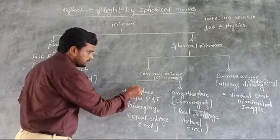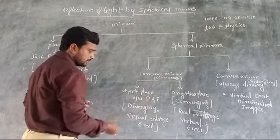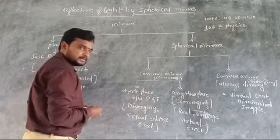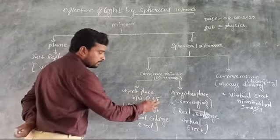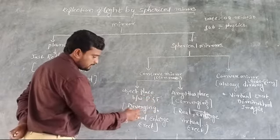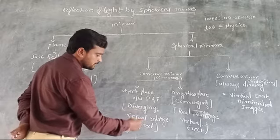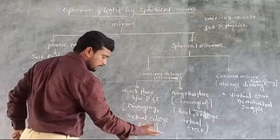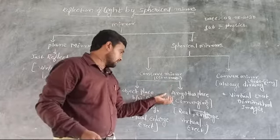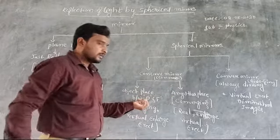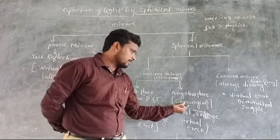There is one special condition: when the object is placed between the pole and the focus, the image formed is a diverging point. The image formed when the object is placed between the pole and focus is virtual, enlarged, and erect.